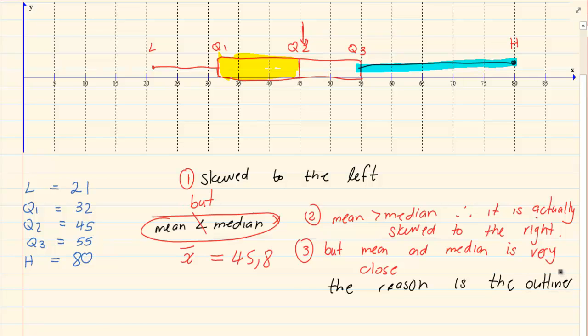That outliner, which is a high outliner, increased our mean. It increased our mean. That is what it did. High outliners increase your mean. Low outliners decrease your mean. So, the reason is the outliner increased the mean.